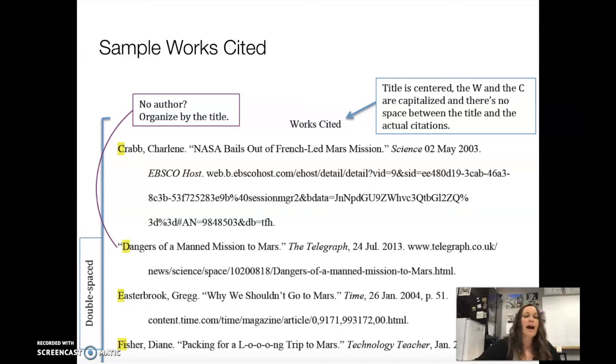Another thing that's important, the entire document is double-spaced, and there are no extra spaces between the citations. Additionally, you'll notice I highlighted the first letter of the start of each citation. I did that to emphasize that your citation should be in alphabetical order. The first one says Crabb, starting with a C. The second one is Dangers, starting with a D. And the third one is Easterbrook, starting with an E. C, D, E. That goes in alphabetical order. Also notice, my second citation does not have an author, so instead my citation starts with the title, and so you should still organize your citations alphabetically, whether that's by the author or by the title. Hopefully you have authors, but if not, you can always go by the title.